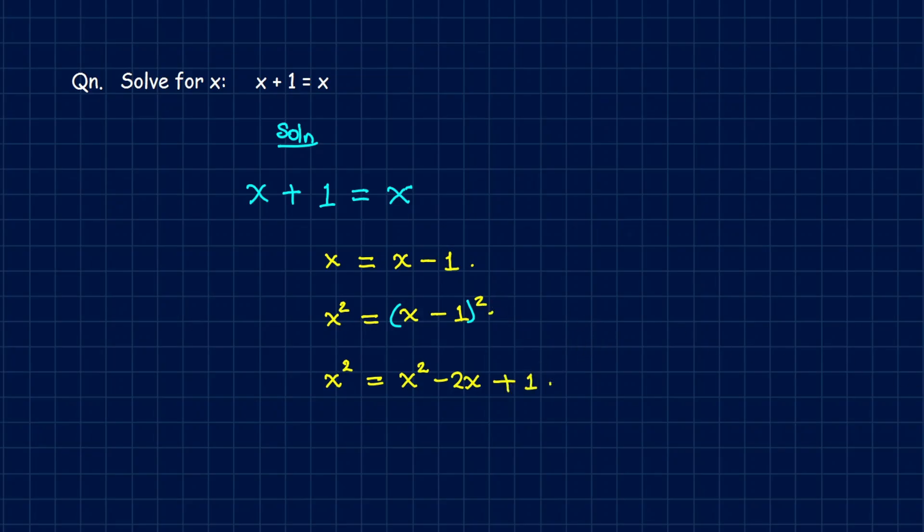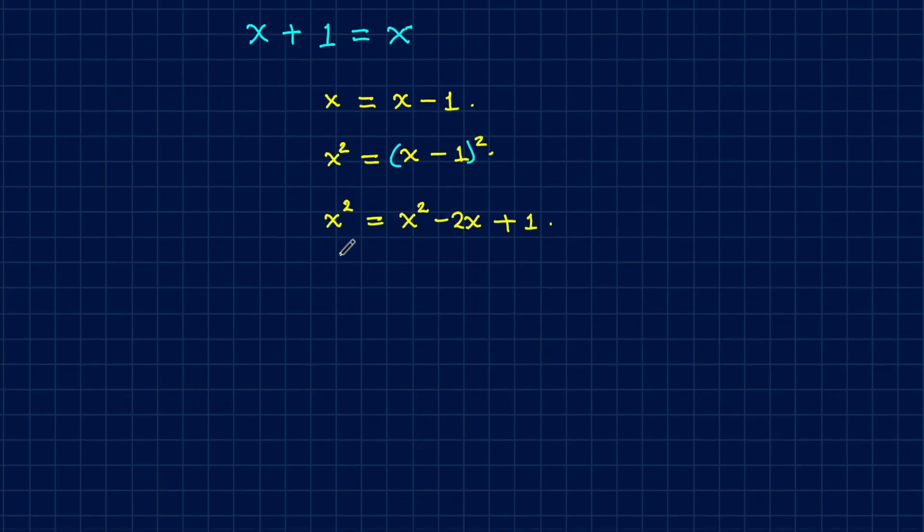Now the next thing here is to simplify by bringing this to the right hand side where we have our original x here minus the x that came from the left hand side. Then we copy our two terms plus 1.